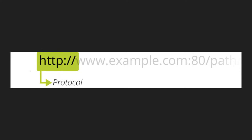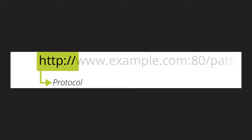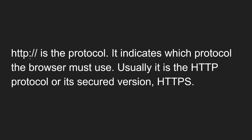The first part is http — this is called the protocol. You'll see http: followed by double slash. This first part is the protocol, which is how we are making the request. HTTP is the protocol; it indicates which protocol the browser must use.